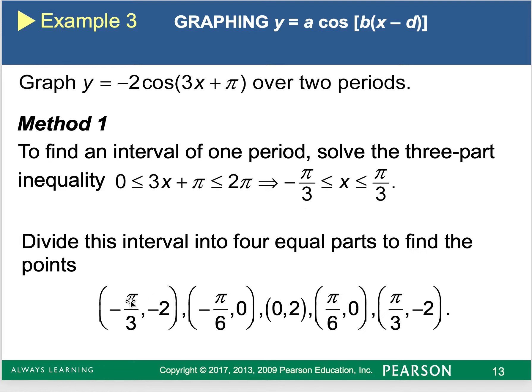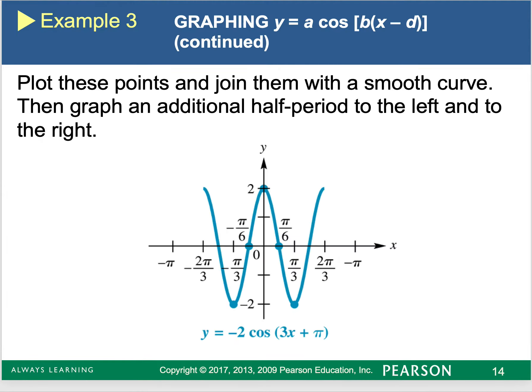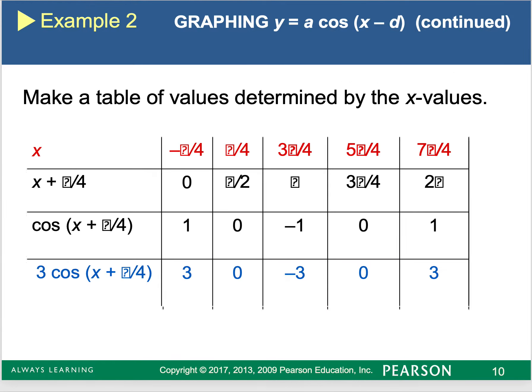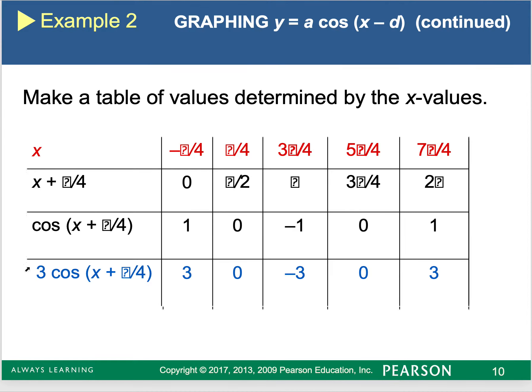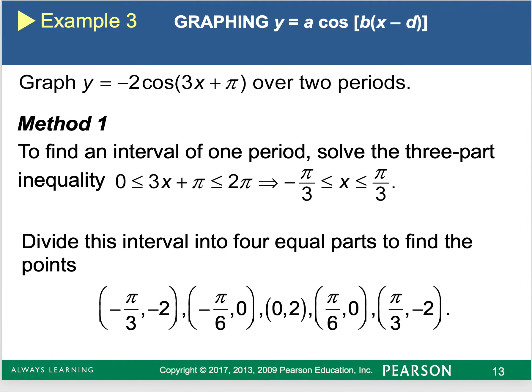I'm taking that interval, and I divide it into four equal parts, and I use the table to get my graph. The same thing we did up here. So I'm taking those points, negative π over three, I'm plugging it into my function. That's where this came from.